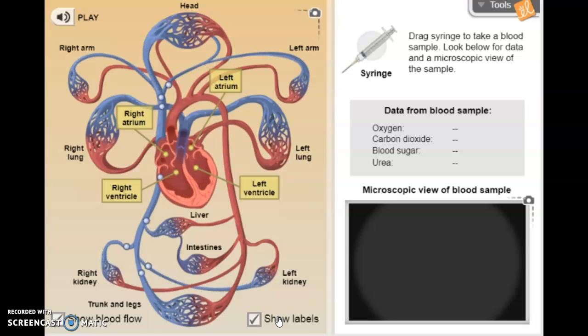When I show the labels it gets a little crowded, but you can see there's the heart, it's broken up into four chambers: the atriums and the ventricles.